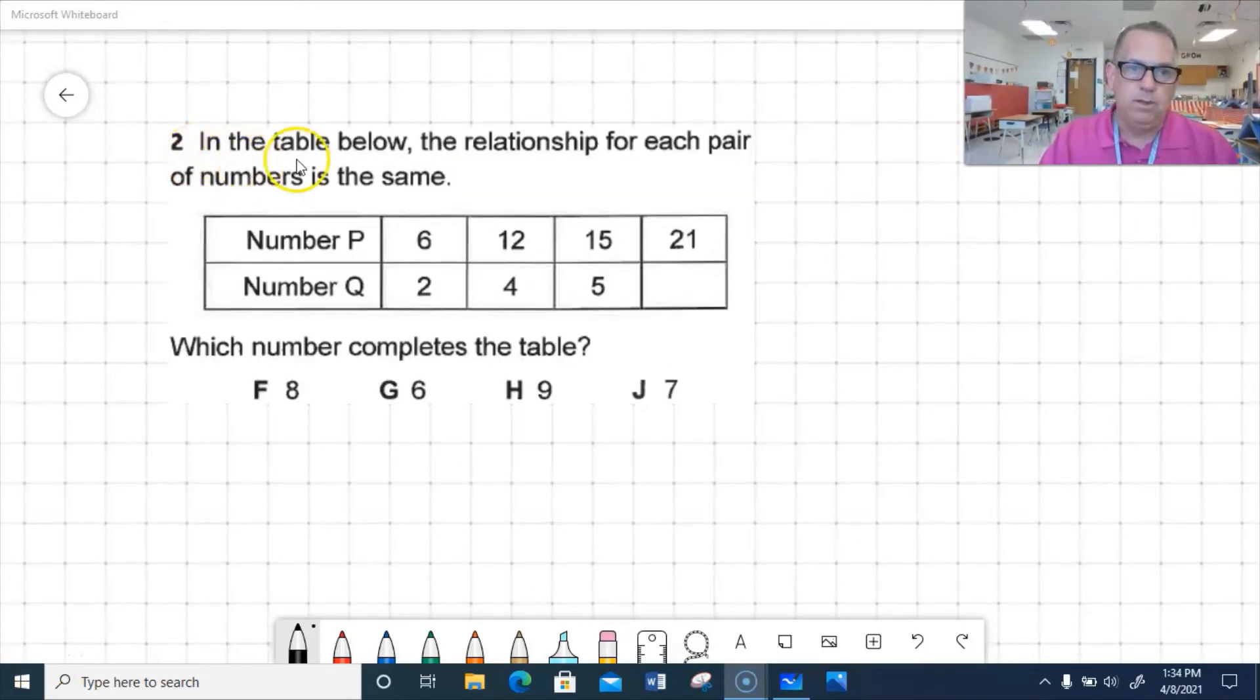Okay, problem number 2. In the table below, the relationship for each pair of numbers is the same. So it's always the same relationship going from row P to row Q. Which number completes the table? Okay, so going from row P to row Q, is it getting bigger or getting smaller? That's right. They're getting smaller. And there's two operations that make things smaller. There's subtraction and there's division. So we'll go ahead and try subtraction.